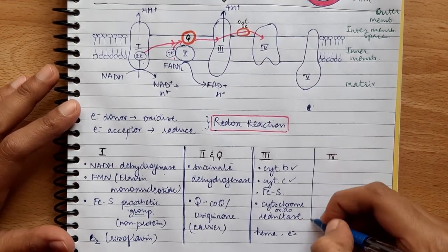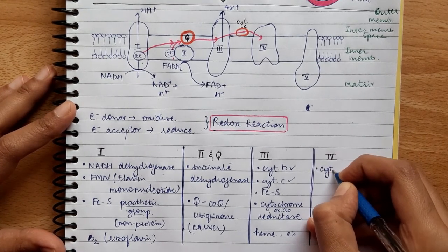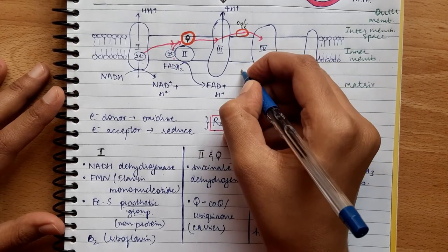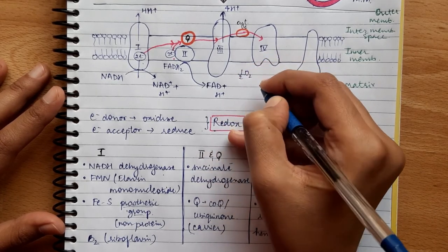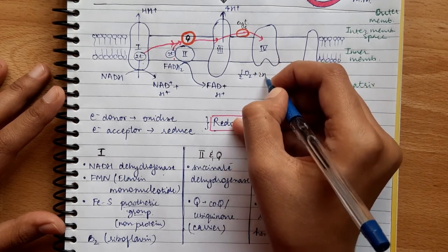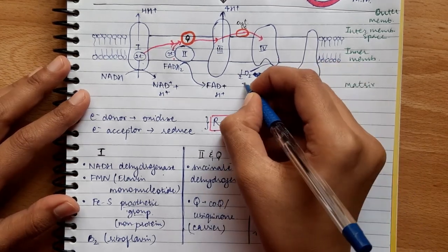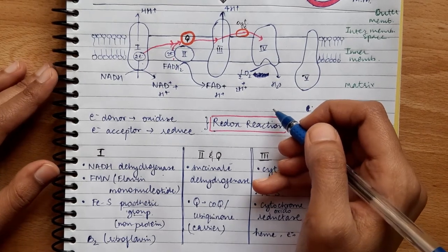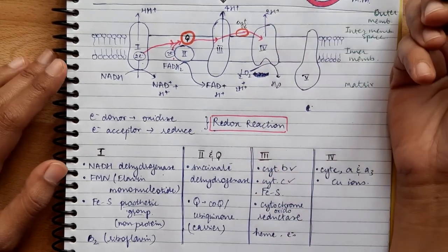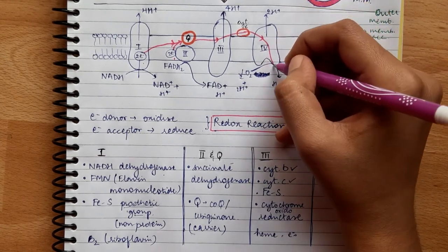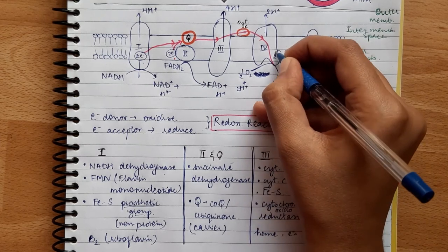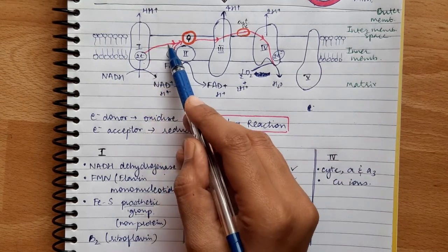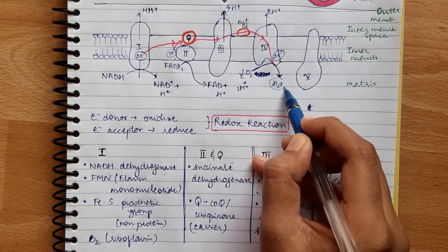Coming to Complex 4: this complex contains Cytochrome C, A, and A3, and also contains copper ions. Half a molecule of oxygen combines with two H⁺ ions to give one molecule of H2O — this is the reduction of oxygen. Complex 4 also pumps 2 H⁺ ions into the inter-membrane space. The 2 electrons accepted from Cytochrome C are used in this reduction process to form H2O.